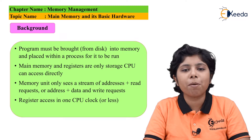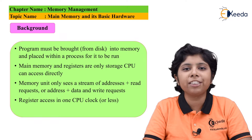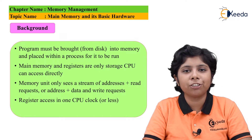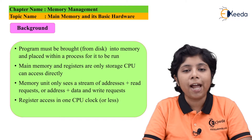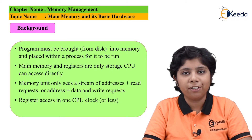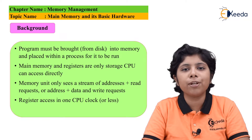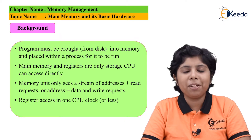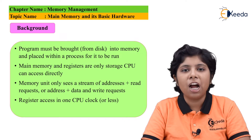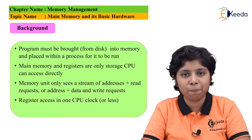The user will only see a stream of memory addresses and must not know how they are generated — for example, by an instruction register, indirect addressing, literal address, and so on. Users only see a sequence of memory addresses generated by the program. Main memory and the basic registers built into the processor are the only general-purpose memory that can be directly accessed by the CPU.